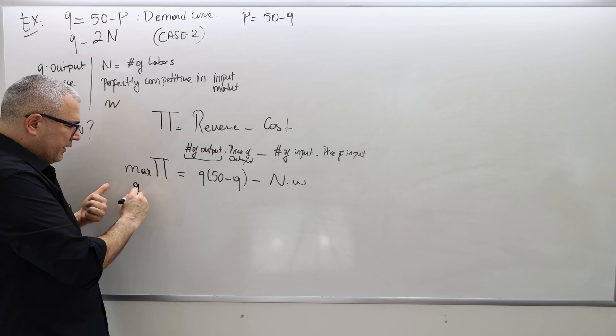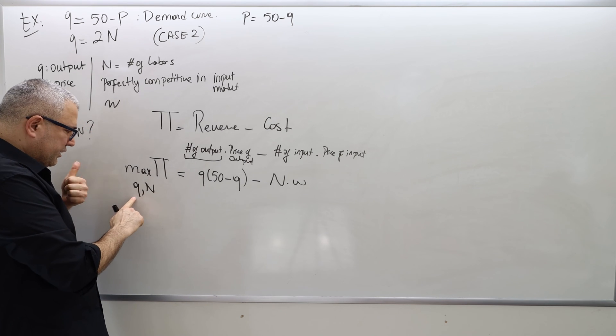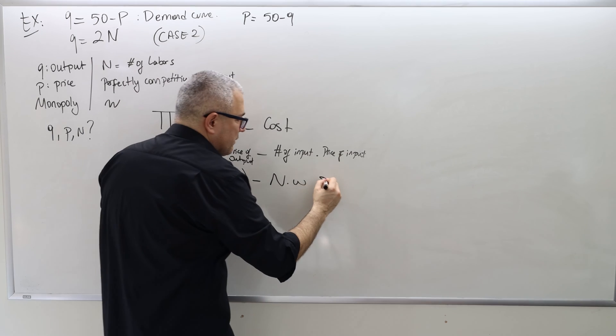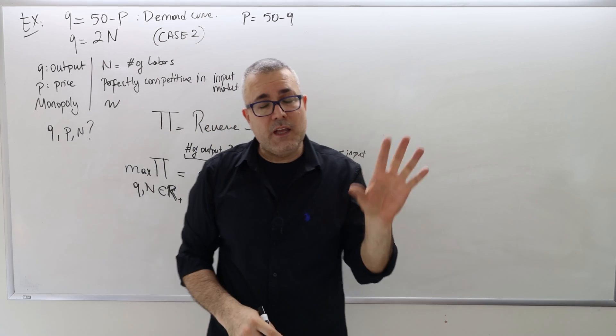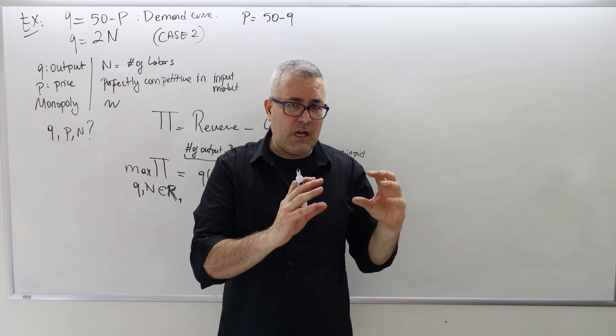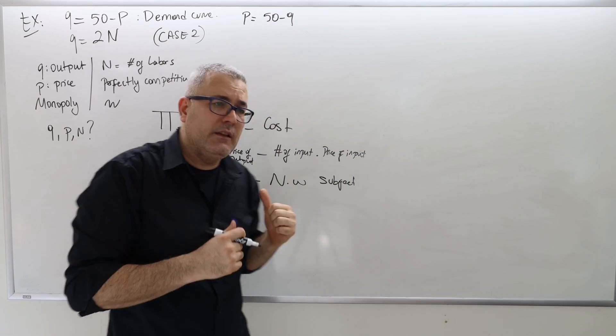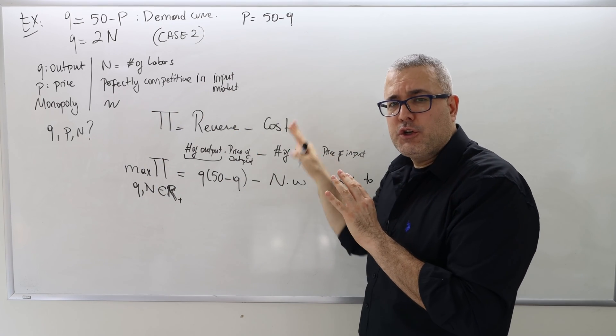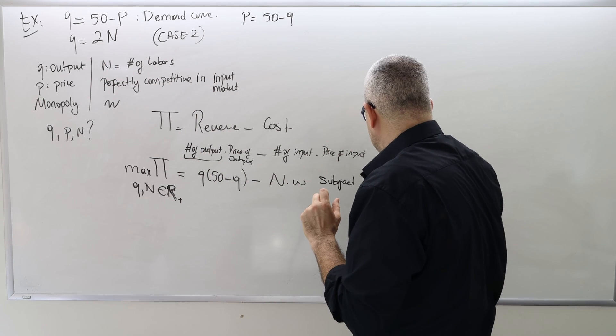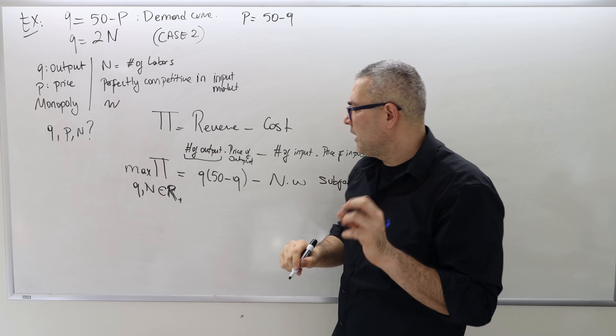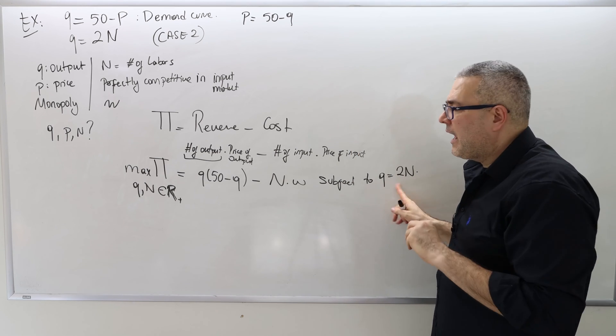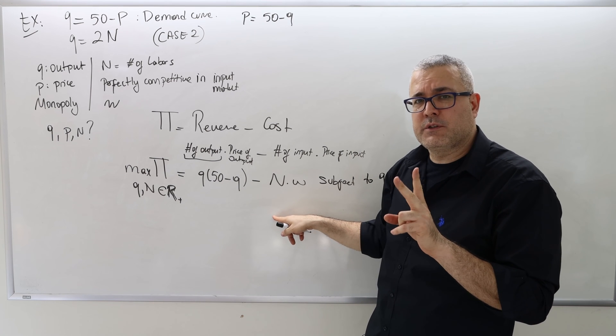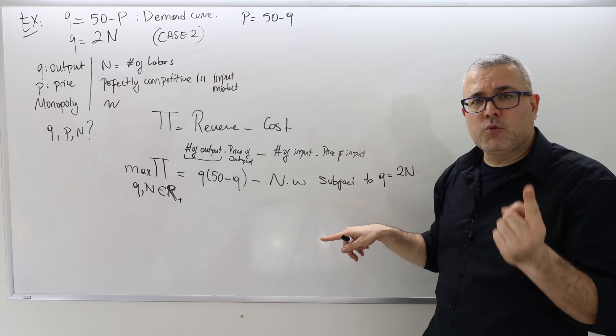So what is the monopolist choosing to maximize this profit? Well, it chooses how much quantity to produce and how much labor to hire. So therefore, it chooses Q and N, some non-negative real numbers. Obviously, subject to the technology. Remember, don't forget, when we talk about input market, technology or the production function should always be included in your optimization problem. Subject to, output equals the function of input. So Q is equal to 2 times N. So whenever I see Q, I can just plug 2N and reduce the number of parameters into 1 rather than 2.